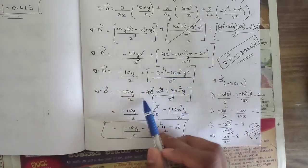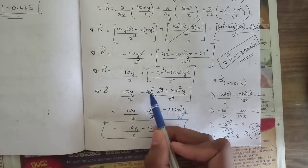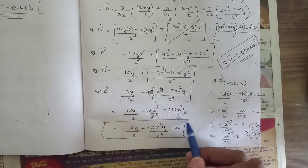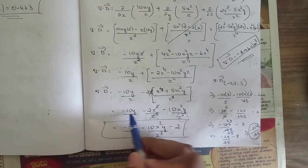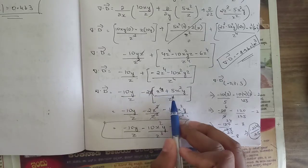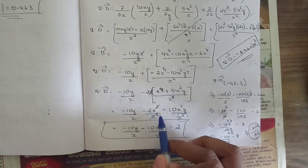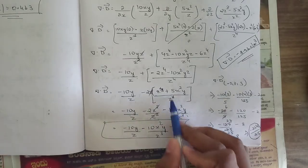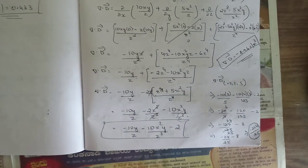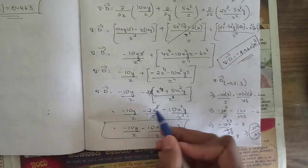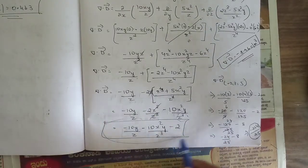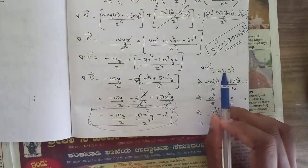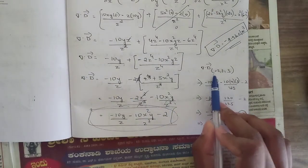Further simplifying: 4z⁴ - 6z⁴ = -2z⁴, and taking 2z common allows cancellation of z terms in the denominator, leaving -10y/z - 2z³/z³ - 10x²y/z³. After cancellation of z³ terms, we obtain the final expression for del·D.